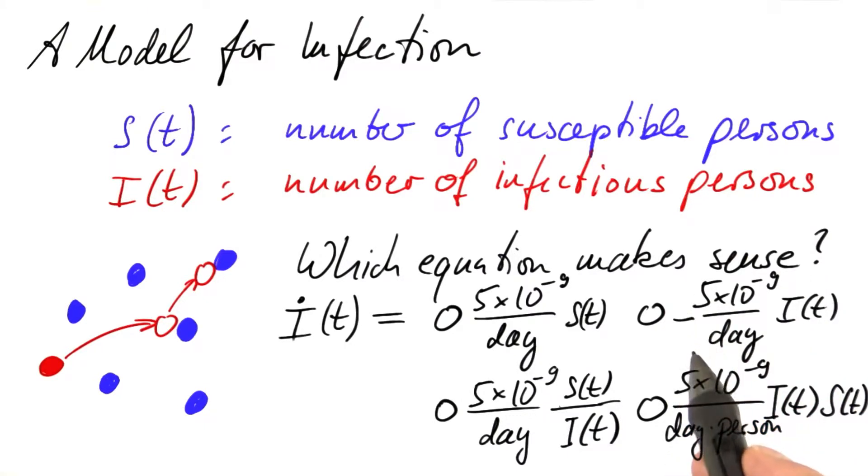This answer would simply lead to a decay of the number of infectious persons, no matter what. The rate of change is a negative factor times the current value. This does not make sense.